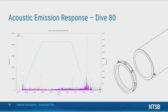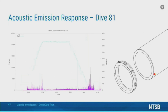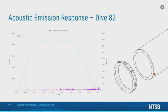The acoustic emission response at the forward port side sensor showed a slight initial increase after dive 80 and a fall off afterwards. Here we see the response for dive 80 and its spike in acoustic activity after returning to the surface. Looking at dive 81, there was an increase in acoustic activity during the descent and once again an increase in activity after returning to the surface. Dives 82 and 83 show a trend of the hull becoming quieter with successive dives, as seen here for dive 82.